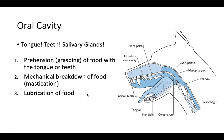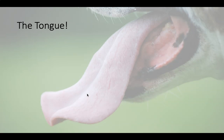Moving down to the oral cavity, which includes the teeth, tongue, and salivary glands. It's responsible for prehension — the grasping of food with the tongue or teeth — mechanical breakdown of food called mastication, and lubrication of food so that it can be swallowed and passed into the esophagus.